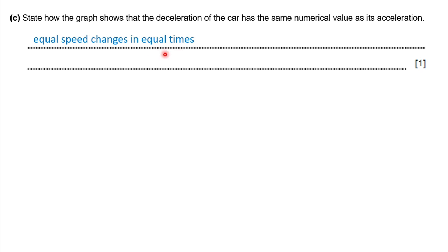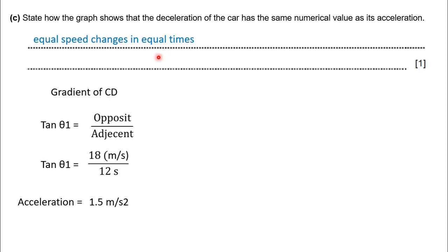We have already calculated the gradient of the CD segment. For that part, we got the numerical value of acceleration as 1.5 meters per second squared. So let's find the gradient of the AB segment.